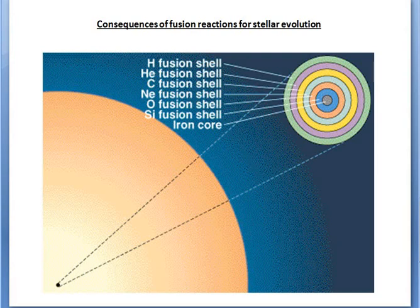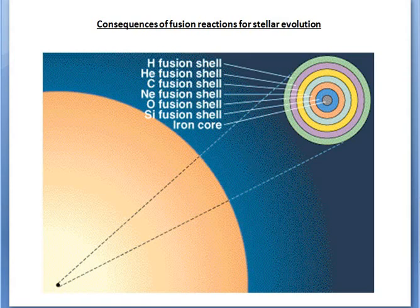Another important point is that for temperatures greater than 10^9 Kelvin, neutrinos play a very dominant role. In this temperature zone, neutrinos carry away a larger and larger fraction of the energy, which reduces the net energy production for the star and speeds up its evolution.